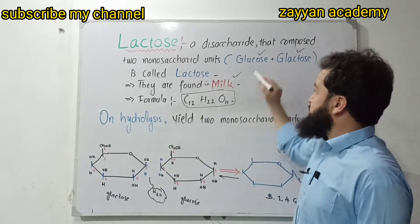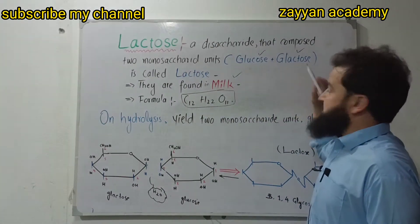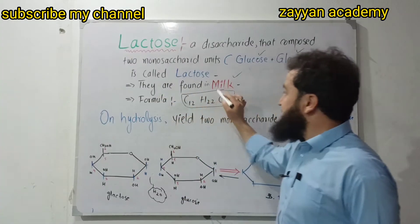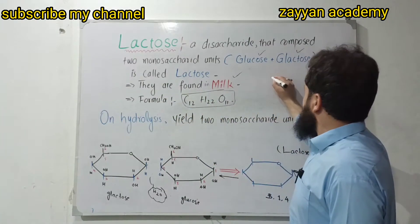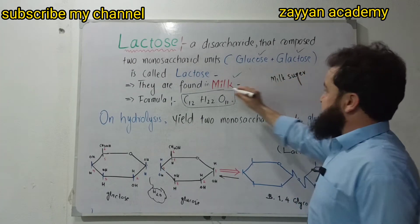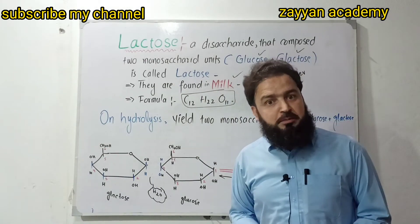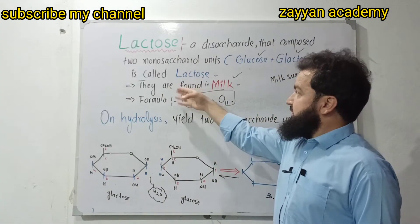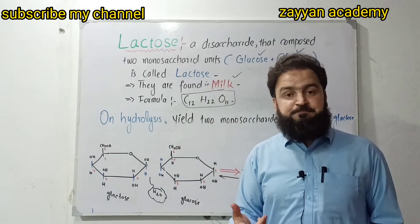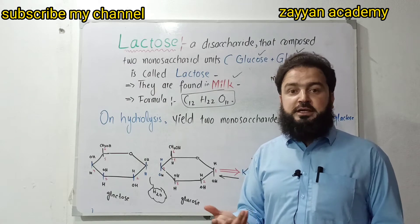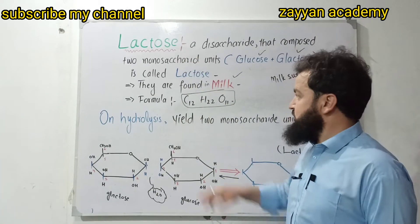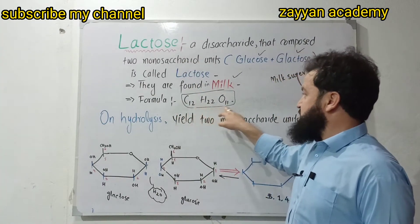These monosaccharide units — glucose and galactose — are found in milk. This is milk sugar. Lactose is also known as milk sugar, found in milk and milk-based products like milk coffee. Its chemical formula is C12H22O11.